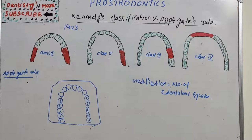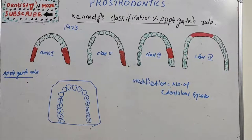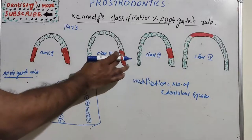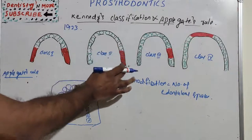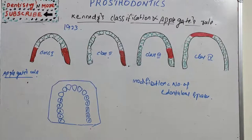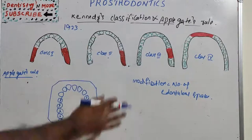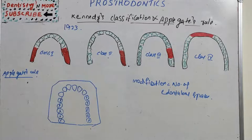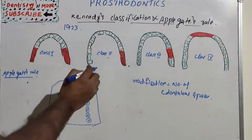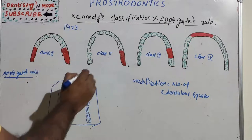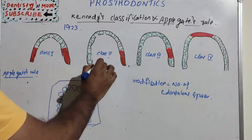Class 2 is a unilateral edentulous area — only one side has absent teeth with no teeth posterior to it. It is also known as unilateral distal extension.